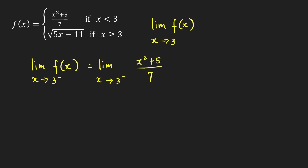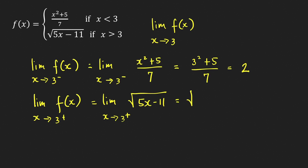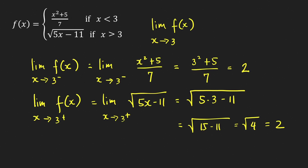The limit of (x² + 5)/7 as x approaches 3 from the left is defined at 3, so by direct substitution we get (9 + 5)/7 = 14/7 = 2. For the right-hand limit, we use √(5x − 11) as x approaches 3 from the right. The radicand limit is 5(3) − 11 = 4, which is positive, so the limit is √4 = 2.